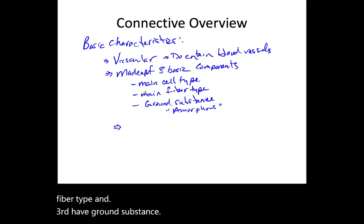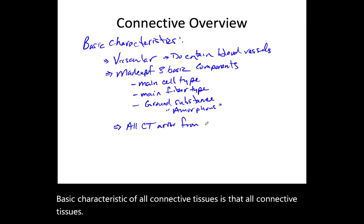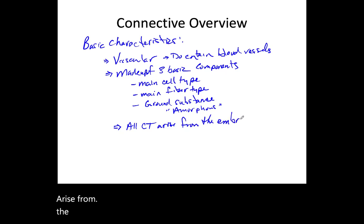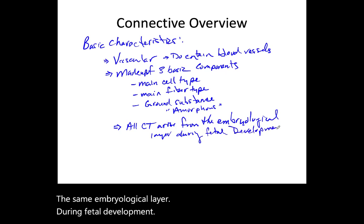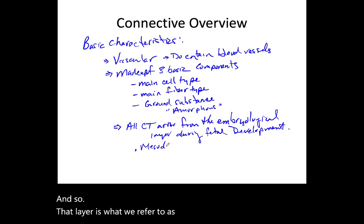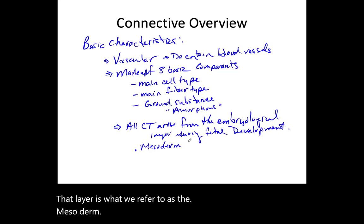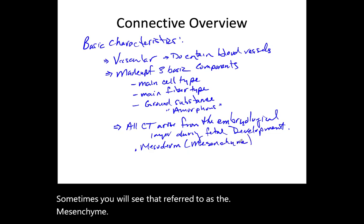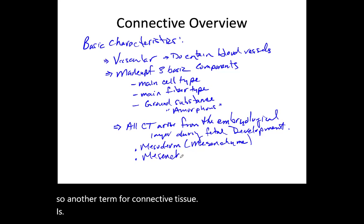The third basic characteristic of all connective tissues is that they all arise from the same embryological layer during fetal development. That layer is what we refer to as the mesoderm — sometimes referred to as the mesenchyme. Another term for connective tissue is mesenchymal derivatives.